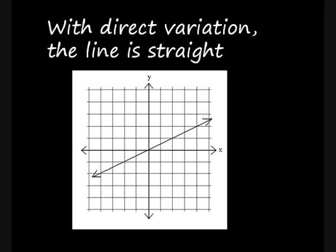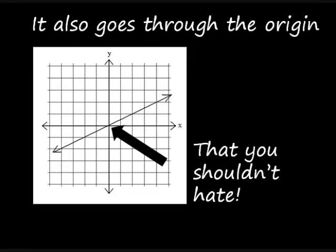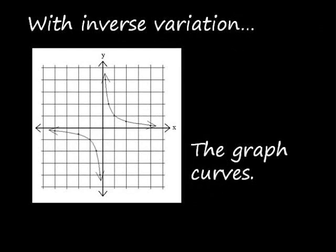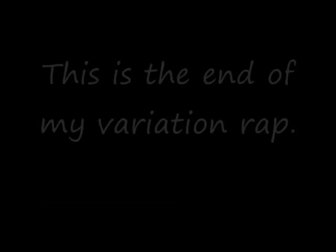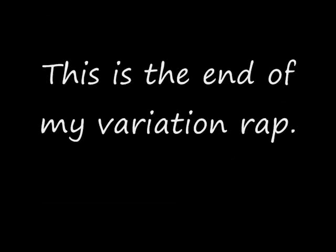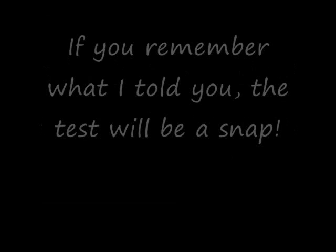Let's look over here at the coordinate plot. The direct variation line is straight, and it also goes through the origin. The inverse variation graph curves, and the origin also gets on its last nerves.